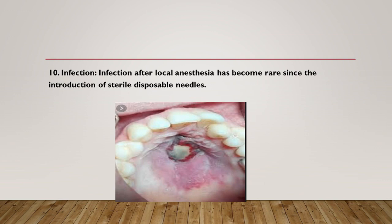The last complication is infection. Infection after local anesthesia has become rare since the introduction of sterile disposable needles. Causes include contamination and improper technique, such as injecting the solution into an area of infection. Prevention: use sterile disposable needles, proper handling of the needle, use cartridges only once, and store them in the original container. Management: if infection occurs, the patient will complain of pain requiring immediate treatment. A course of antibiotics should be prescribed for seven days.